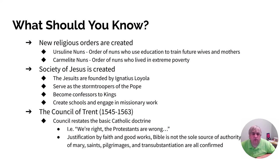Finally, the Council of Trent was an 18-year-long series of meetings where the Catholic Church decided how to respond to the English Reformation and the Protestant Reformation. This is where they decided: we are the ones who are right, and we are not going to change anything — we're going to keep going the way we're going.